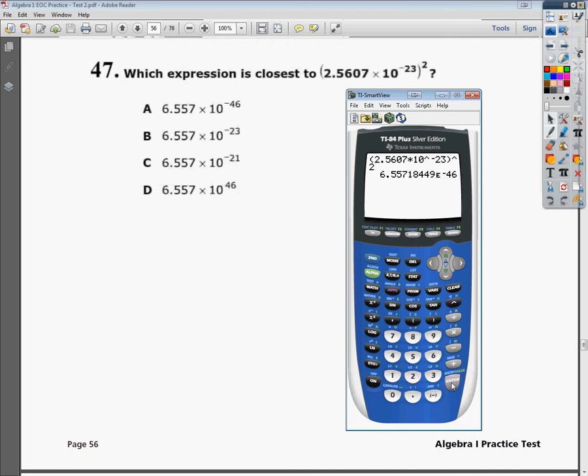And we read out the big long number, it gives us 6.557, and we got e to the negative 46, which reads for us times 10. So we're going to go over here, 6.557 times 10 to the negative 46, which is our choice A.